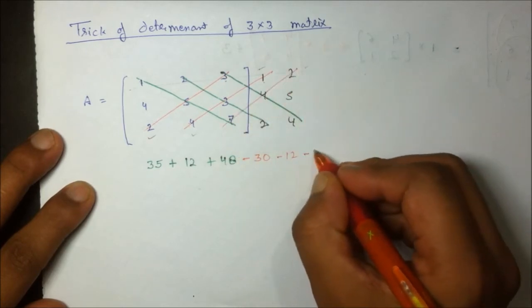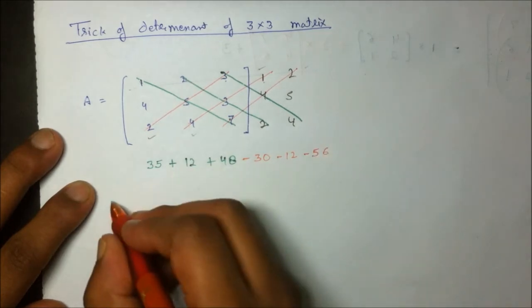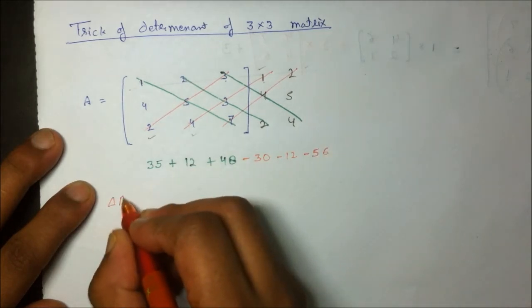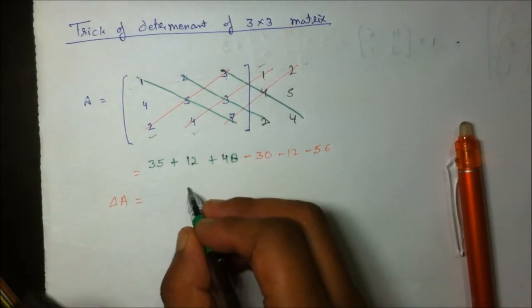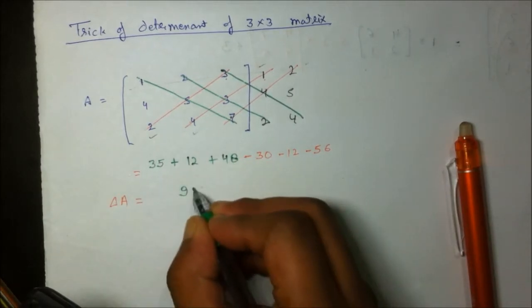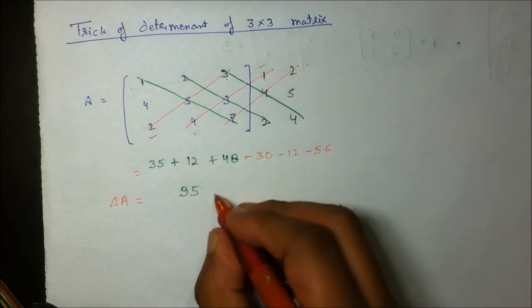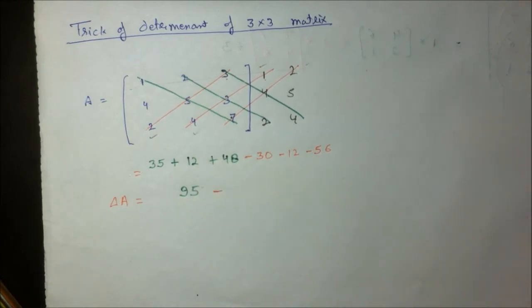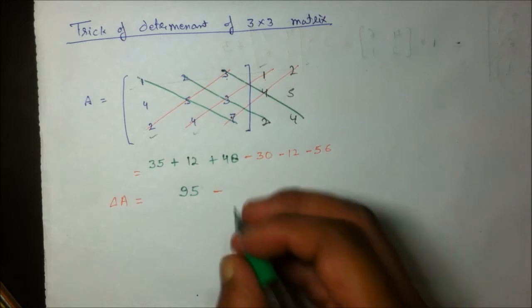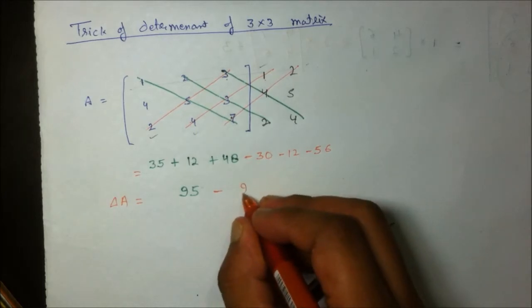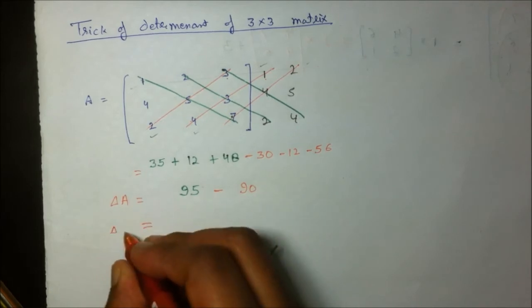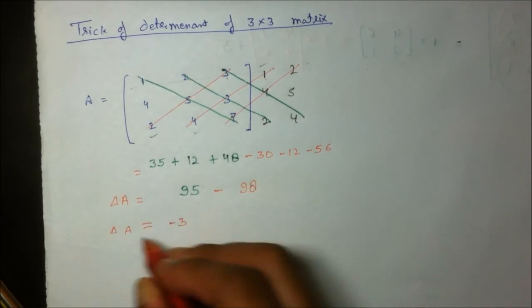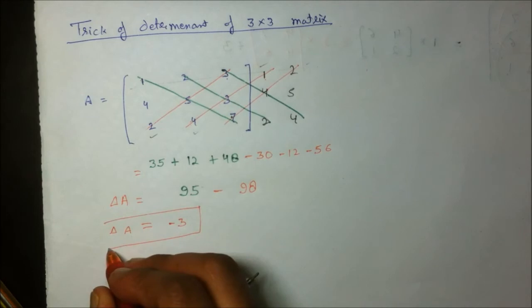The third lower diagonal: 7×4×2 = 56, so minus 56. The sum of lower diagonals is 98. The determinant det(A) = 95 − 98 = −3. This is the determinant of the 3×3 matrix.